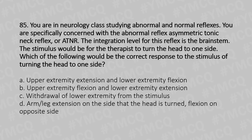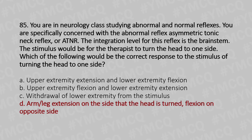Now let's move to our 85th question. You are studying abnormal and normal reflexes, specifically the asymmetric tonic neck reflex, or ATNR. The integration level for this reflex is the brainstem. The stimulus is for the therapist to turn the patient's head to one side. Which of the following would be the correct response? Option A: upper extremity extension and lower extremity flexion. Option B: upper extremity flexion and lower extremity extension. Option C: withdrawal of the lower extremity from the stimulus. Option D: arm or leg extension on the side the head is turned, flexion on the opposite side. The answer is Option D.